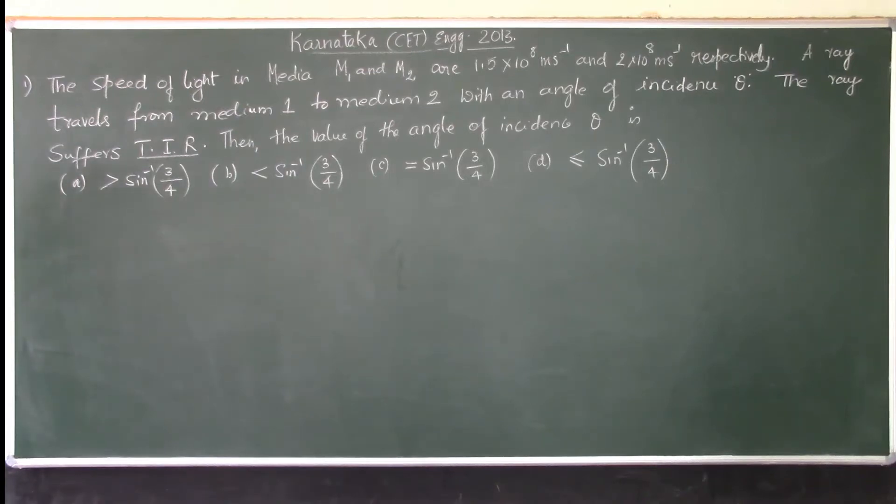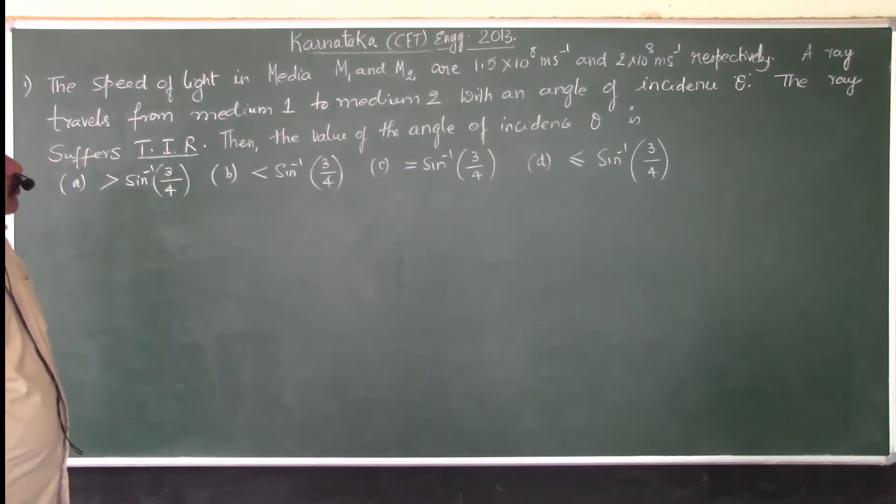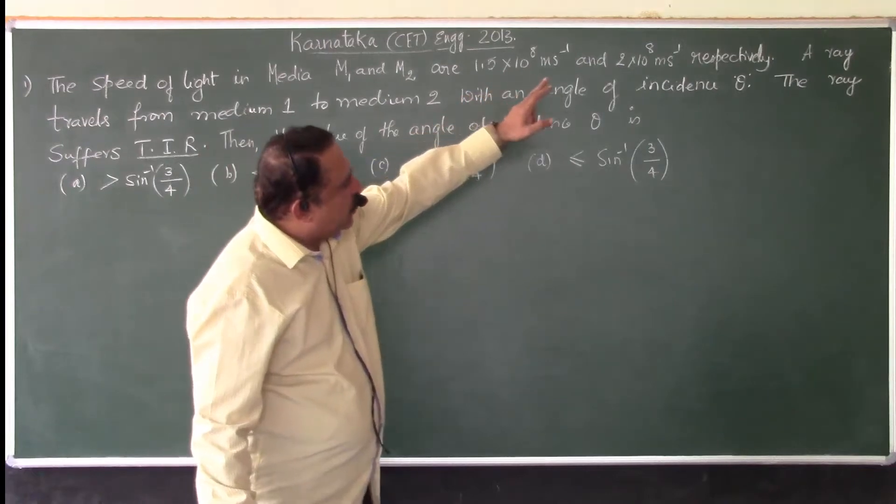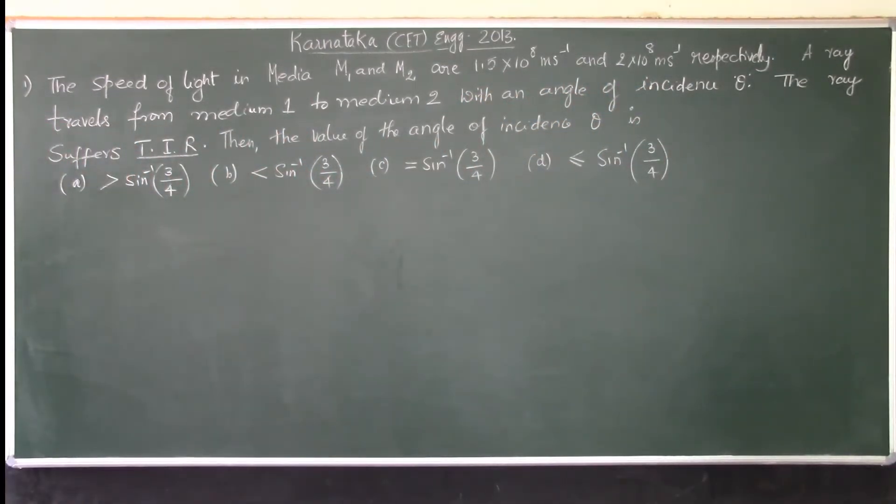The speed of light is 1.5 into 10 to the power of 8 meters per second and 2 into 10 to the power of 8 meters per second respectively. A ray travels from medium 1 to medium 2 with an angle of incidence theta. The ray suffers total internal reflection.